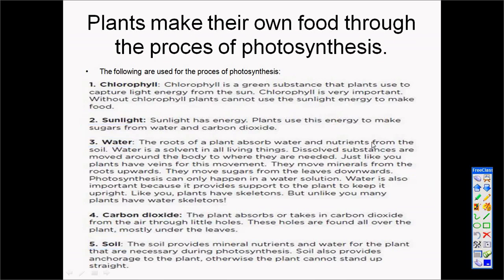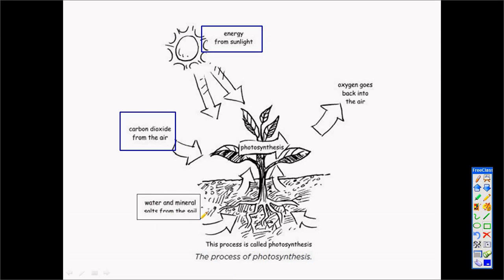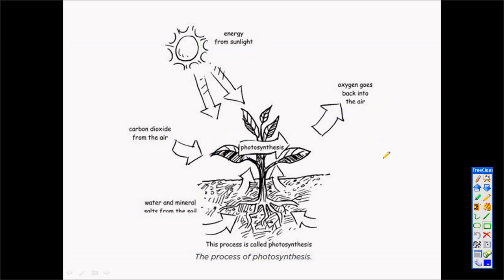Looking at this picture, we have sunlight energy from the sun, carbon dioxide from the air, and water and minerals from the soil. Inside the plant, the process of photosynthesis takes place inside the leaves, and out of the process come oxygen and food. That is why photosynthesis is the most important process on earth — because living creatures like you and me need the food and oxygen that come from plants. I hope you have learned many things today in this Natural Science and Technology lesson. Thank you.